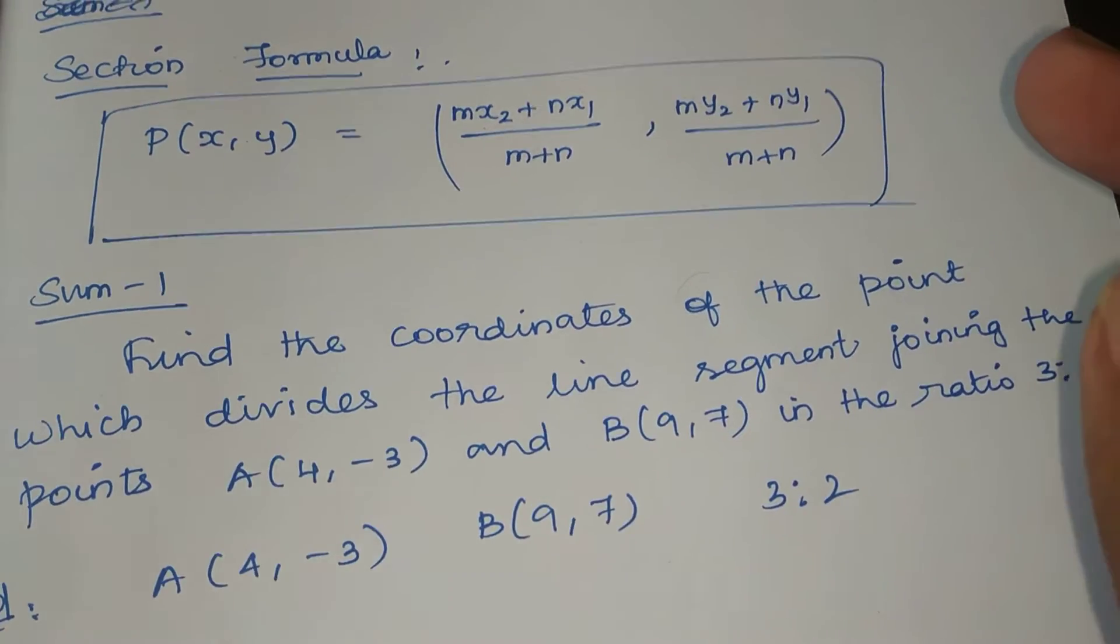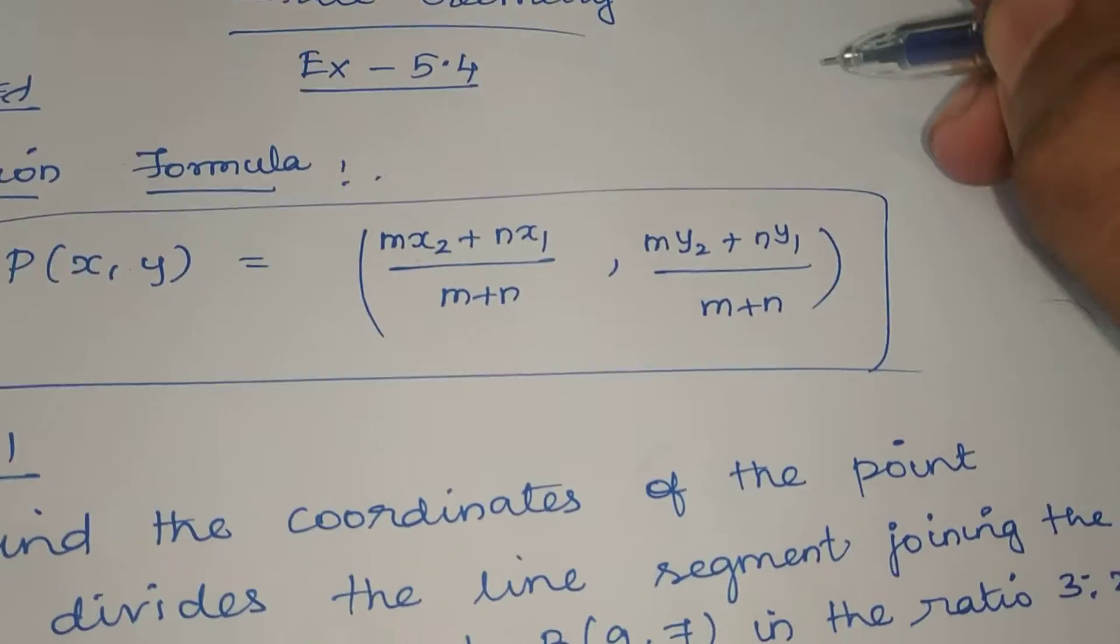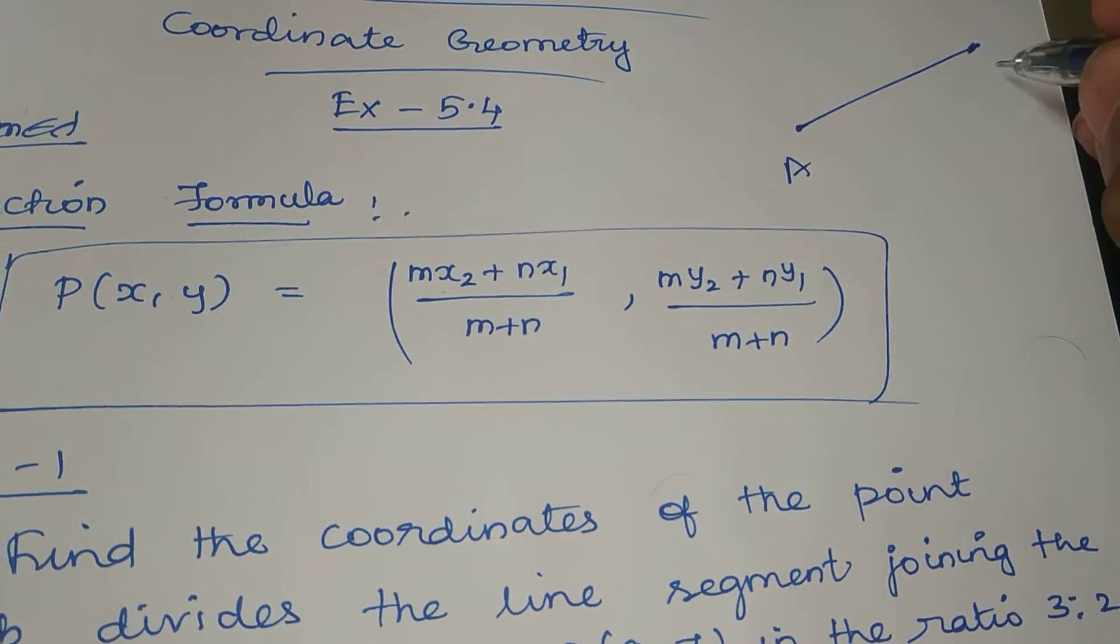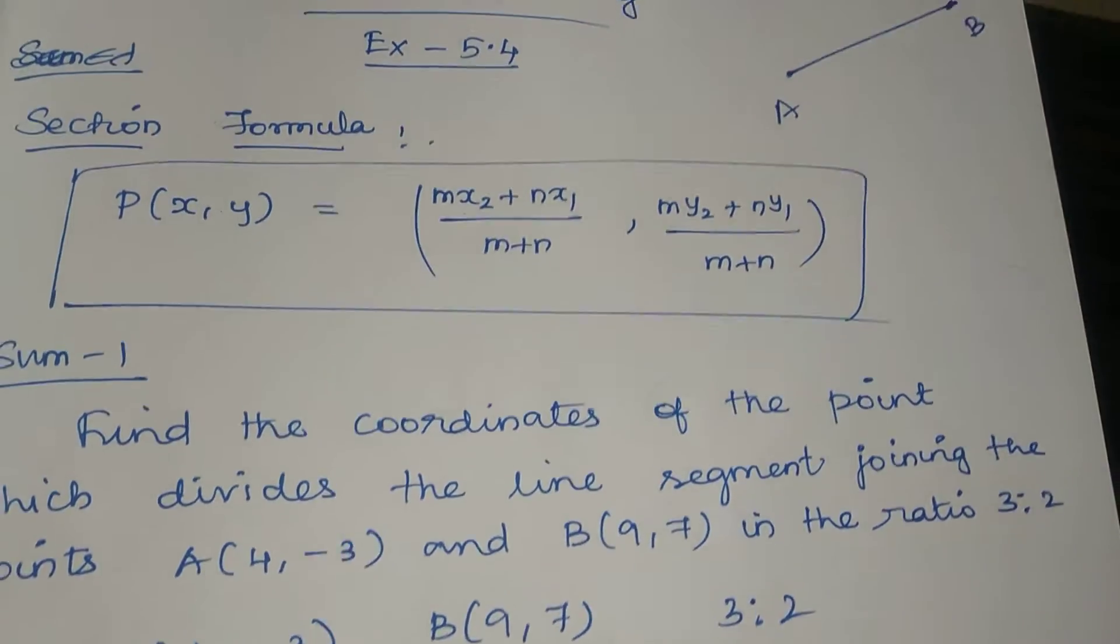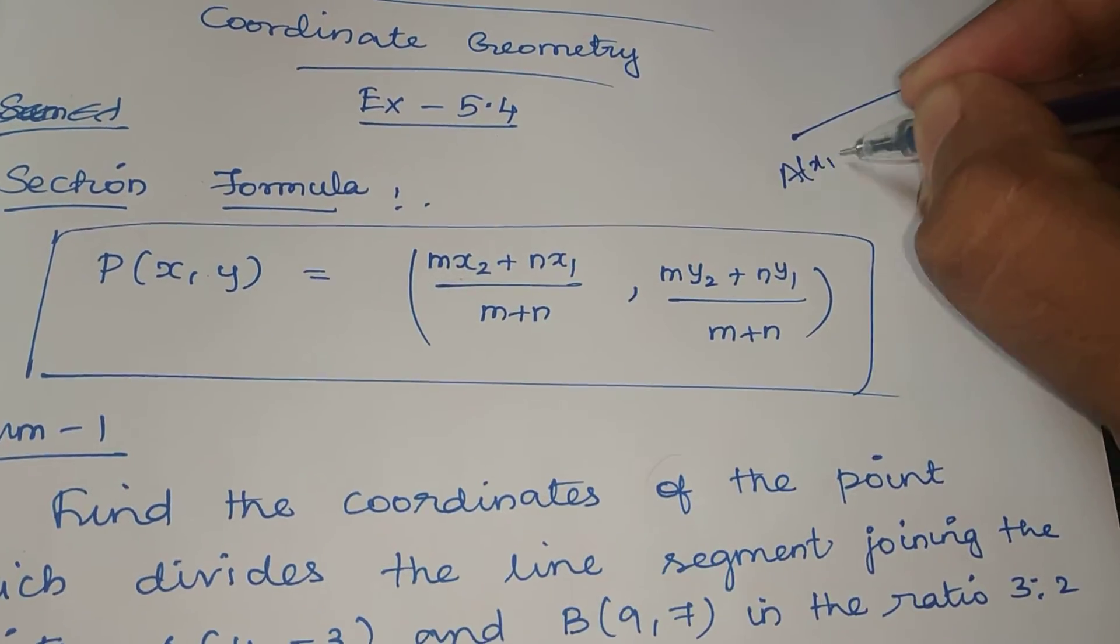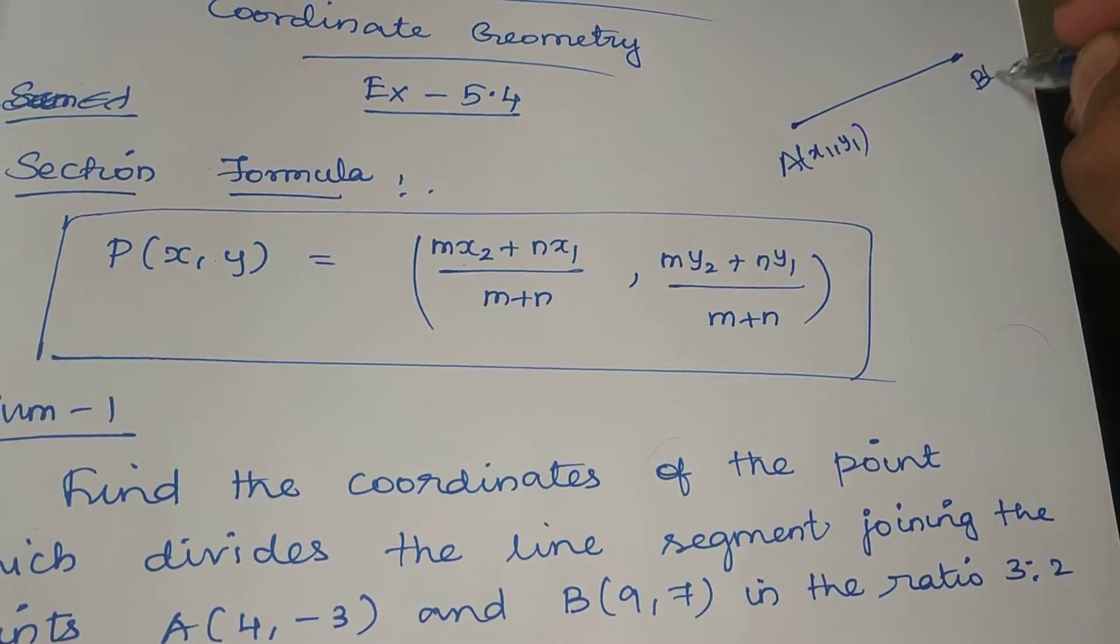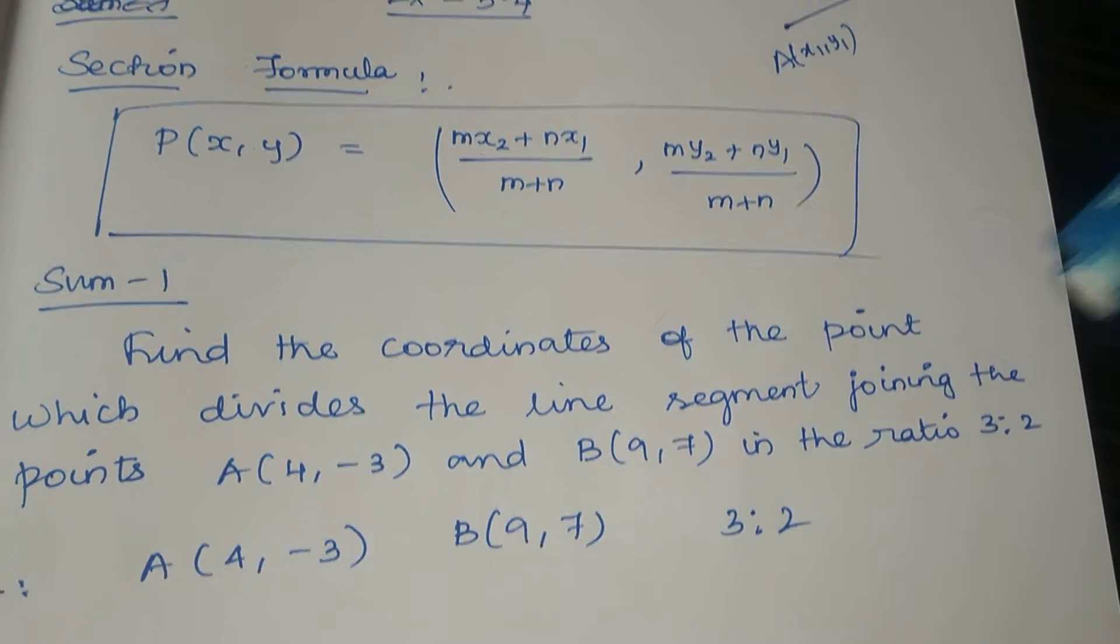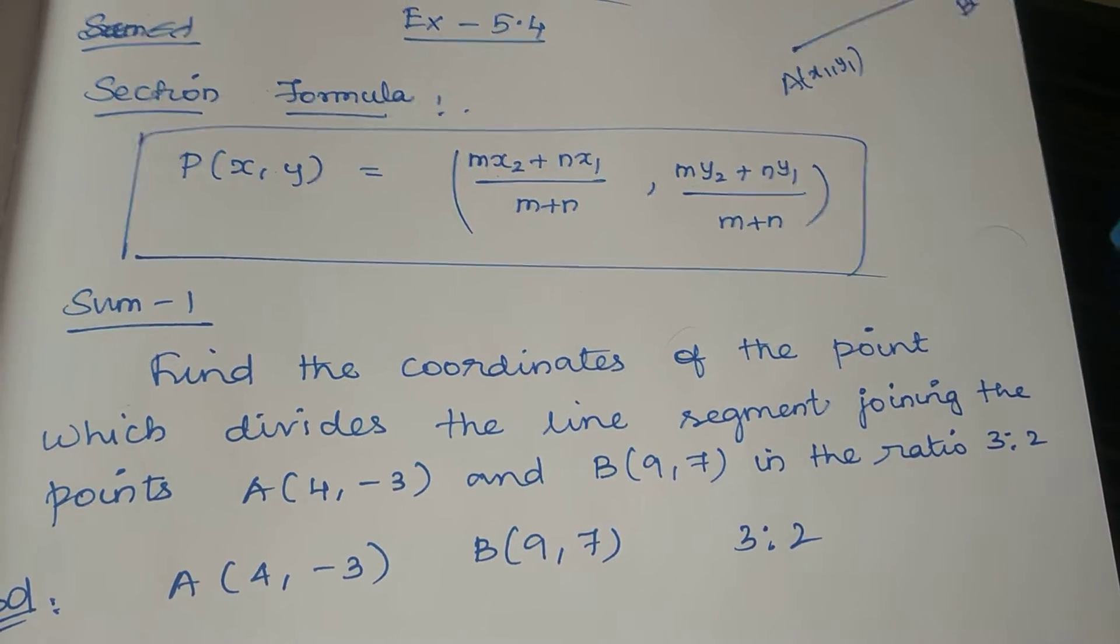See here. Now, there is a line segment AB. We have coordinates here. Here we have coordinates X1, Y1 at point A, and X2, Y2 at point B.